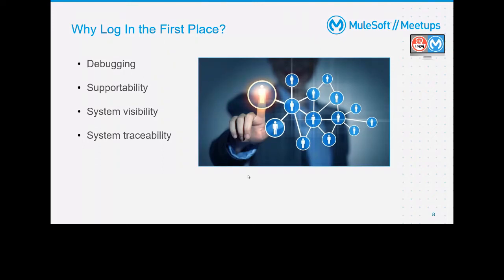Before talking about Log4j2, why do we need logging in the first place? There are four key reasons: debugging, supportability, system visibility, and system traceability. For debugging — in MuleSoft, for example, if an application is deployed on cloud and you want to see why requests are failing, the Mule event changes from connector to connector. A payload for an HTTP connector request can be different from a response, but you won't be able to see it if deployed on CloudHub.